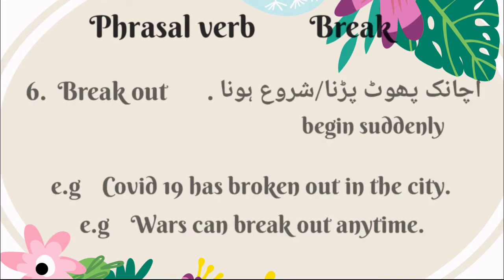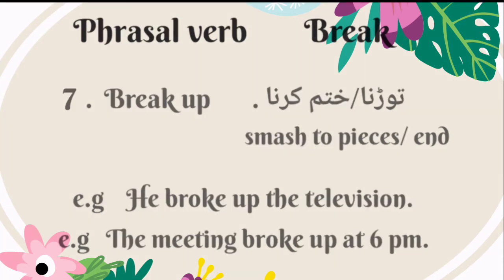The sixth phrasal verb is 'break out.' Its meaning is to begin suddenly — Urdu mein is ka matlab hai achanak phoot parna ya shuru hona. For example: COVID-19 has broken out in the city. Wars can break out anytime. The seventh phrasal verb is 'break up.' Its meaning is smash to pieces or to end — Urdu mein is ka matlab hooga todna ya khatam karna. For example: he broke up the television. The meeting broke up at 6pm.